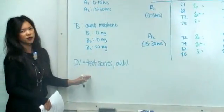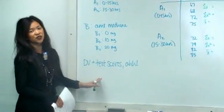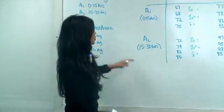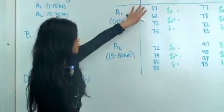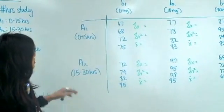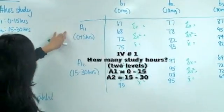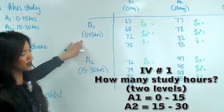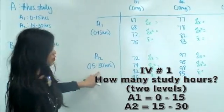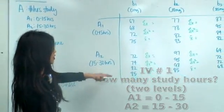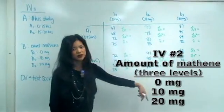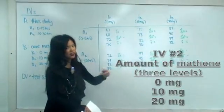Since we only have one dependent variable, that means this is a univariate design. We have the data laid out with A1, which is 0 to 15 hours of studying, and A2, which is 15 to 30 hours. For the drug, we have 0 milligrams, 10 milligrams, 20 milligrams, and so on.